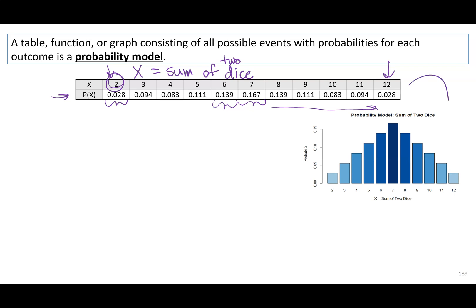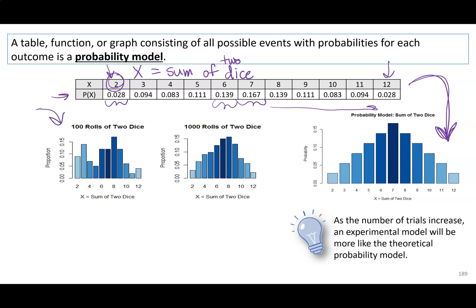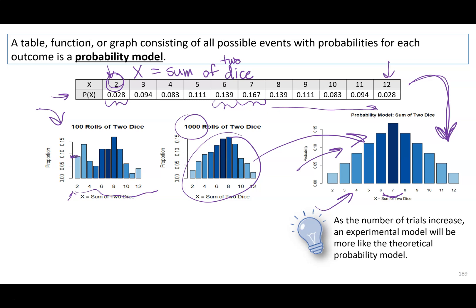Here it is — this is that ideal probability model. If we just rolled dice forever and ever, this would be the probability model. If in real life I roll a hundred times, I might observe some proportion of twos, some threes — it doesn't look great, because it should look more like the theoretical model where sevens are rolled the most, then sixes and eights, and so on. I can increase the number of rolls and it looks much closer. As I increase the number of trials, the experimental models will look closer to the theoretical probability model.